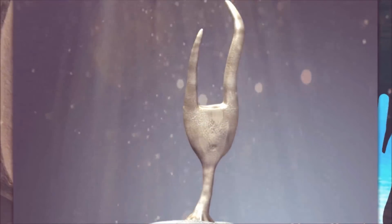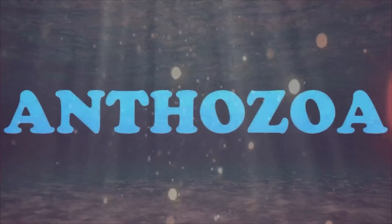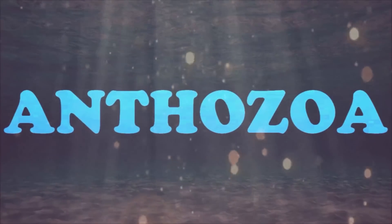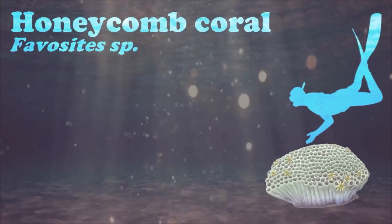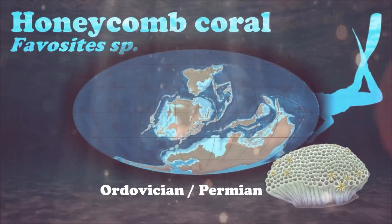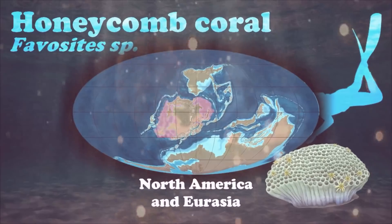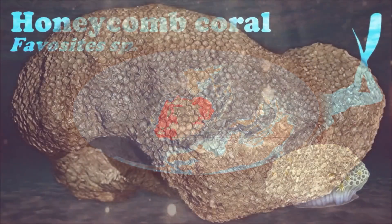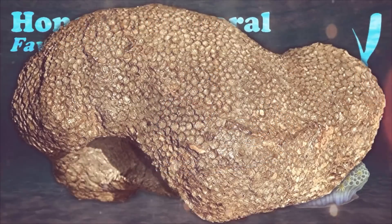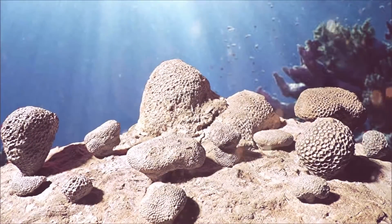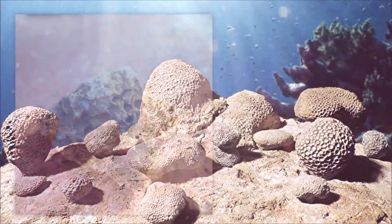Corals diversified a few million years later. Favosites is an extinct genus of tabulate coral characterized by polygonal, closely packed corallites. The walls between corallites are pierced by pores known as mural pores, which allowed transfer of nutrients between polyps.